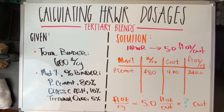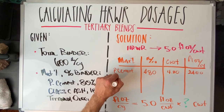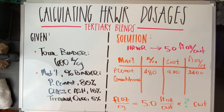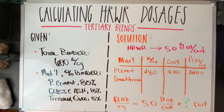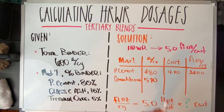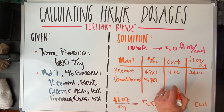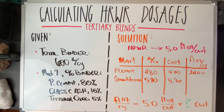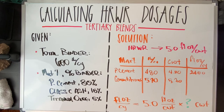Now we're going to jump into our cementitious blend, which adds Class C ash. So 80 plus 15 is 95 percent. 95 percent of 600 is 570 pounds per cubic yard. To get the cement hundredweight, we divide by 100, leaving us with 5.7 cement hundredweights. Multiplying 5.7 by 5 we get 28.5 — so that is 28.5 fluid ounces per cubic yard.